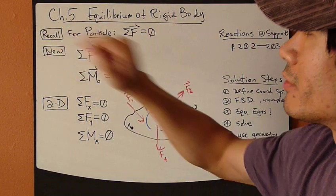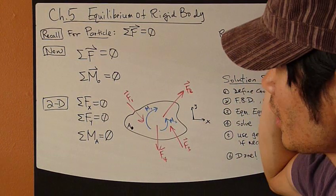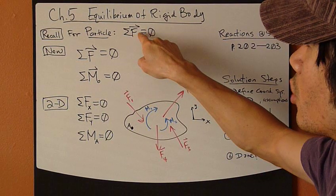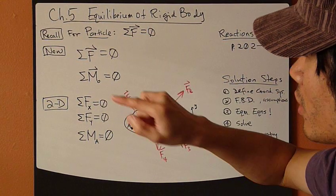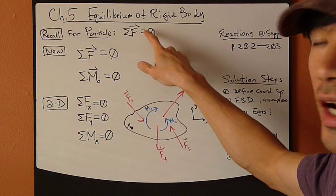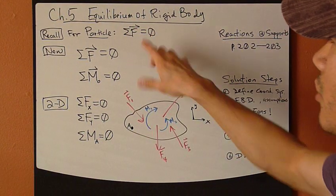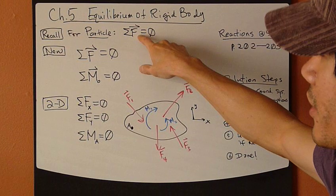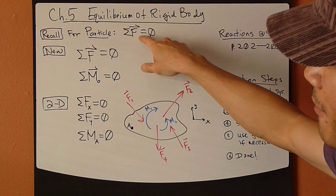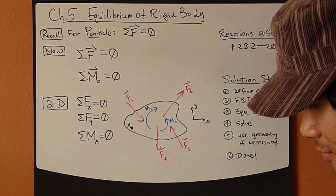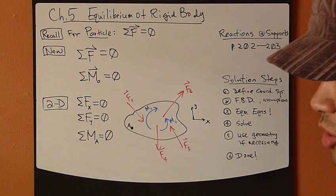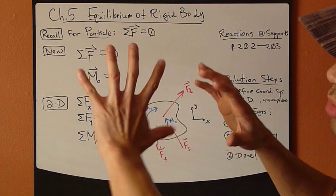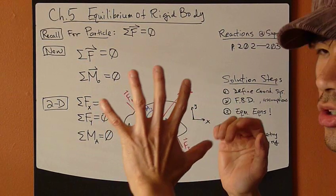Recall what we've done before in Chapter 3: equilibrium for particles. A particle only has one equation for equilibrium — the sum of forces equals zero. This is a vector equation, so depending on whether you're dealing with 2D or 3D, you have scalar equations to work with in the X, Y, and Z directions. Now we're dealing with rigid bodies, and the major difference is that for a rigid body, we now consider the rotational effect — the tendency to want to rotate.